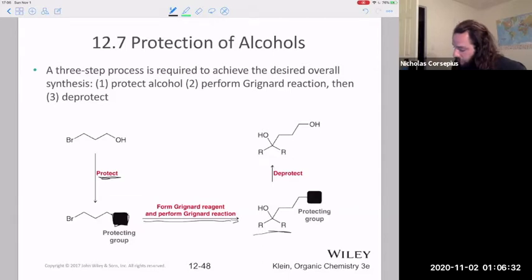So then once we get our desired product on this half, we can go through this deprotecting step and get our alcohol group back. Okay, so this would be a way to create a Grignard reagent with a molecule that already has an alcohol group without sort of ruining things because of that acidic proton.